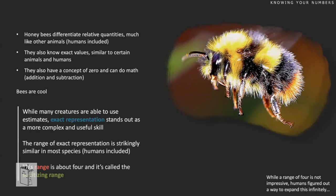What's special about humans is that we've managed to extend our exact representation beyond four, and we did that using symbols. When you see a number symbol, you know exactly what it means without thinking — it's become automatic. You know exactly that it means four, for example, because this is a symbol you've learned.